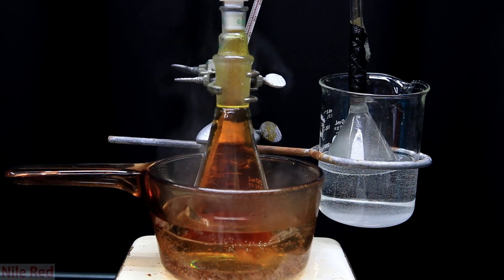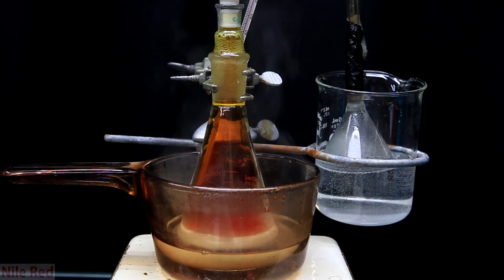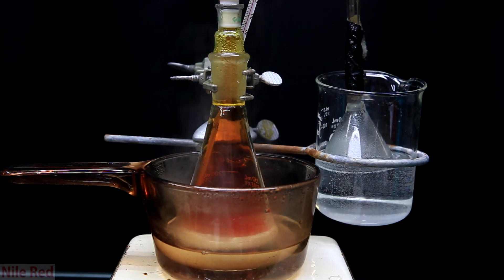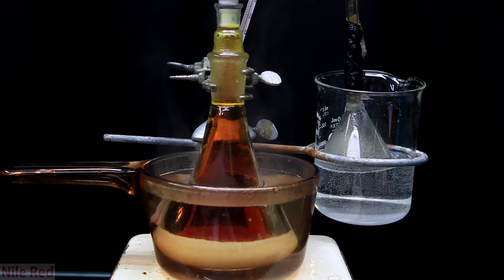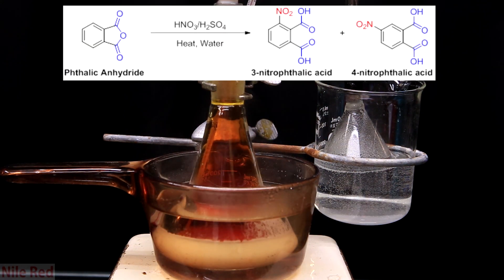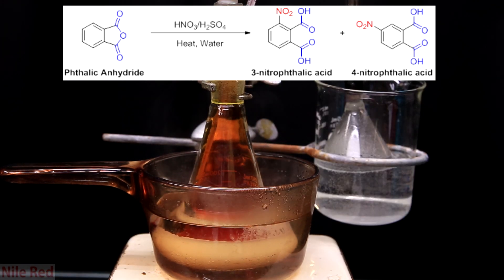Also, the solution will go from being opaque to transparent. As we continue heating it though, it will slowly become opaque again. A lot of the product that's formed isn't soluble so it crashes out of the solution. The reaction that we're performing is a nitration and our product is ideally 3-nitrophthalic acid. Unfortunately, this nitration reaction isn't super specific and it will also produce 4-nitrophthalic acid.